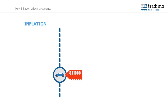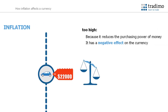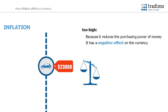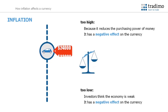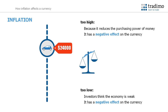Inflation measures the rate at which prices of goods and services rise in a given period. If inflation is too high, prices increase significantly and therefore reduce the purchasing power of money. In other words, the disposable income that consumers have is reduced. This can have a negative effect on the economy, and hence the currency. However, if a country experiences low inflation, prices become stagnant or rise too slowly. Investors could see this as an indication that the economy is not as strong, and therefore this could also have a negative effect on the value of a currency.